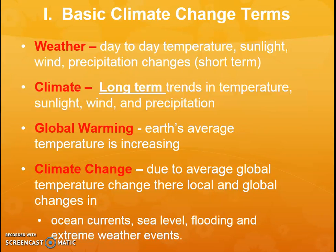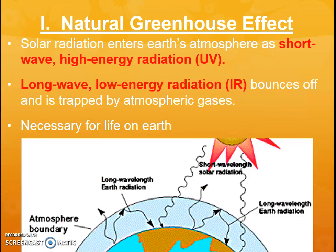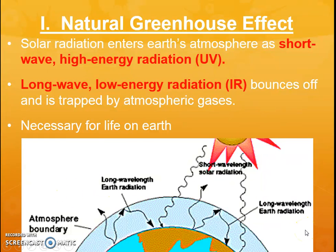Before we get to major causes, a couple more terms. The greenhouse effect refers to a natural phenomenon — a natural process. Solar radiation, or sunlight, enters the earth's atmosphere as short-wave, high-energy UV. We hope the ozone layer blocks some of it, but some gets through past the ozone layer and clouds, hits the earth's surface, and bounces back as lower-energy, longer-wave infrared (IR). That energy gets trapped between our atmosphere and earth's surface because its wavelength is different.